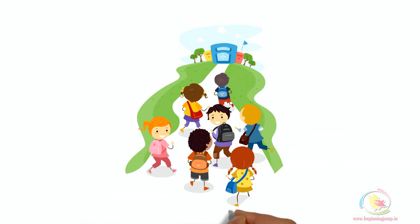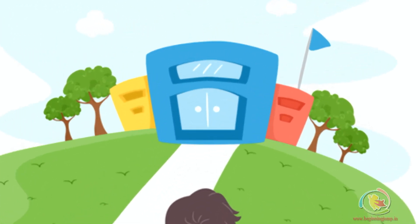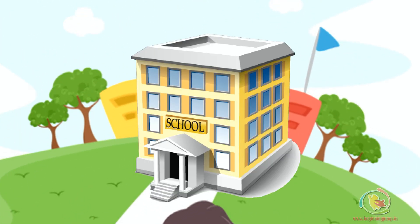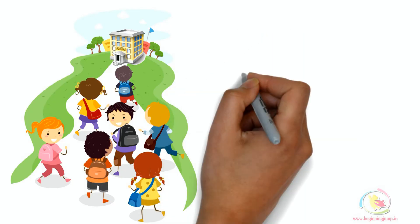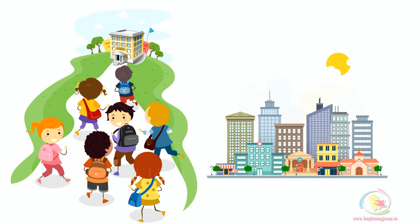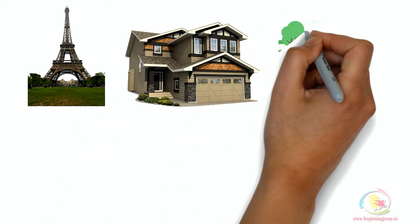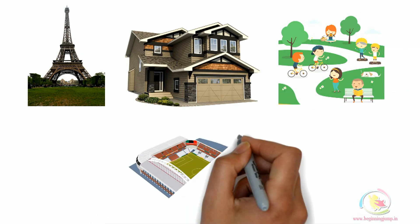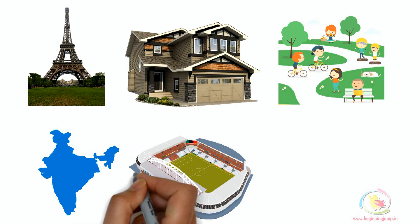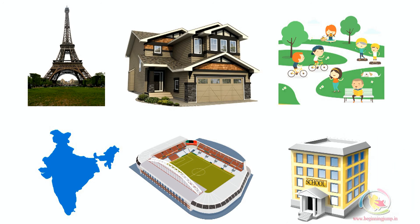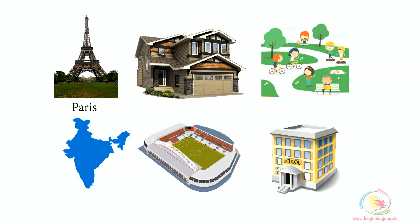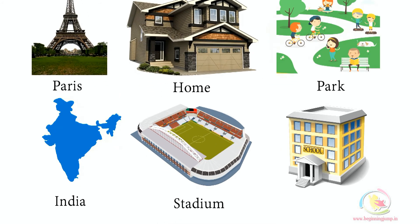Can you tell me where you go to study? Yes, you go to school to study. School is a naming word for a place. Now kids, tell me which city do you live in? The name of that city is its naming word, or noun. The names of places are called nouns — for example, Paris, home, India, stadium, and school.